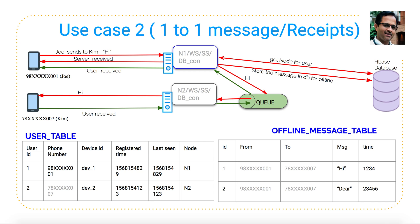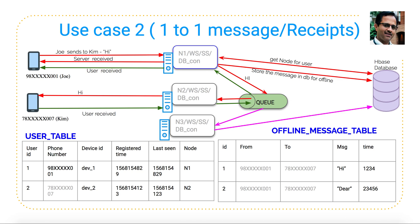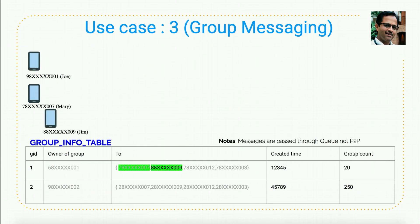If more users are using WhatsApp or Facebook Messenger, you can keep adding new nodes proportionally. For offline messages: if Kim is offline and later comes online, she connects to node 2 as pre-configured. Node 2 connects to the database, checks the offline message table, finds messages waiting for her, and sends them all back to Kim through the WebSocket connection.